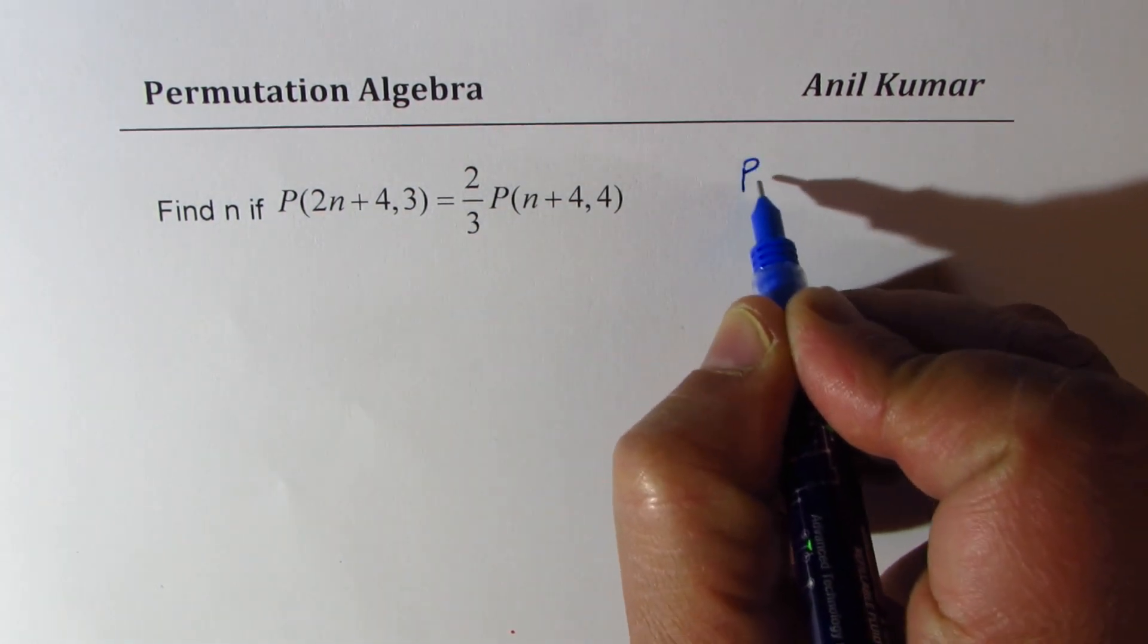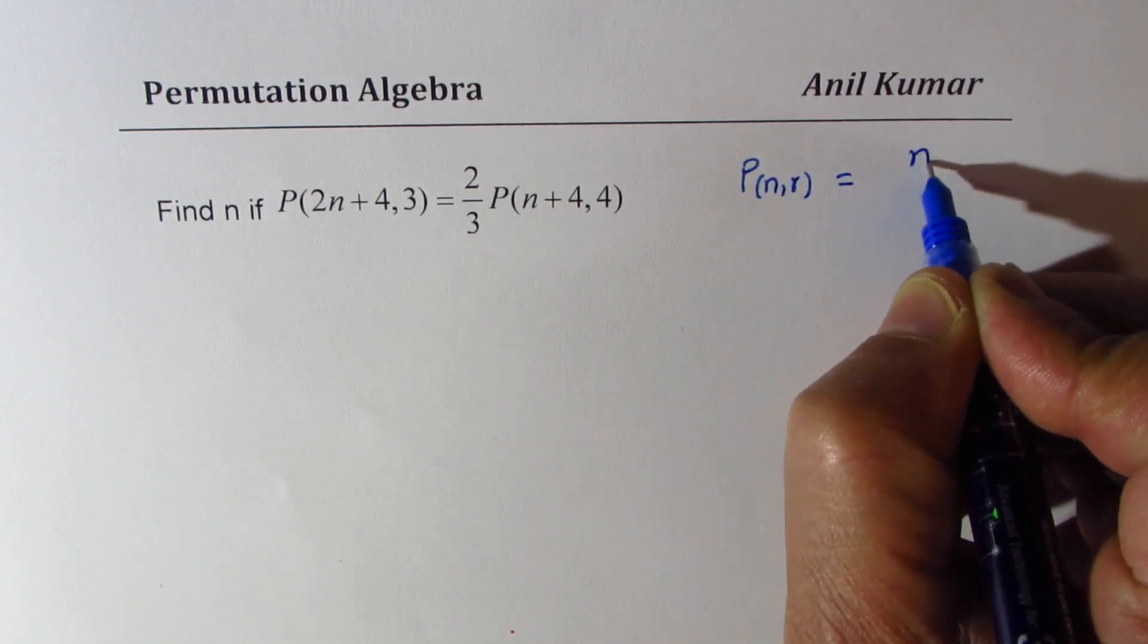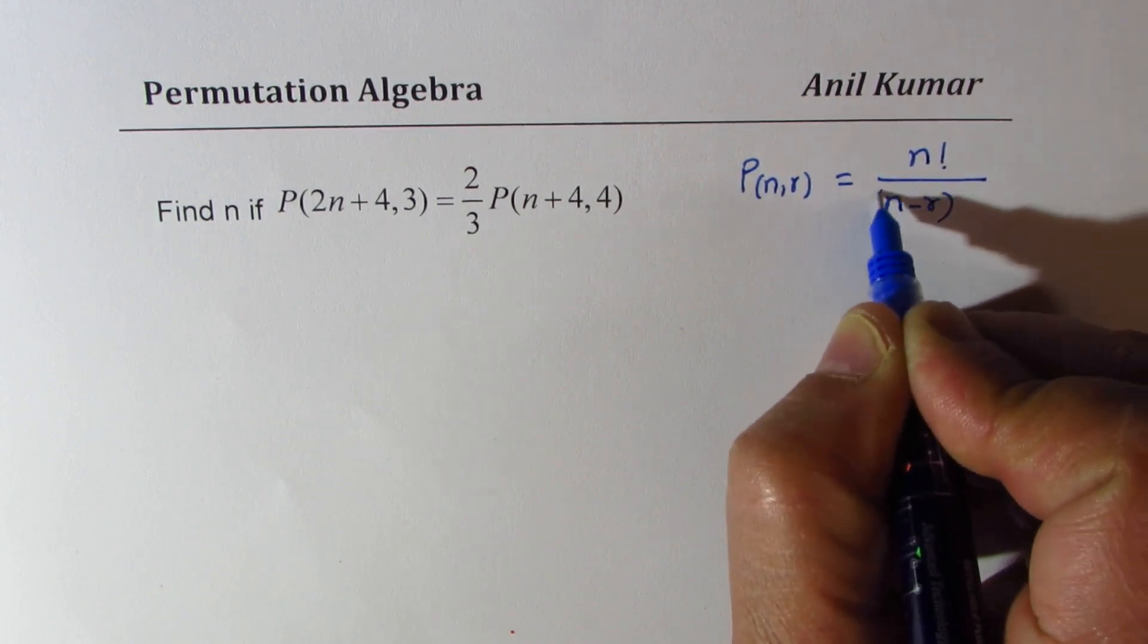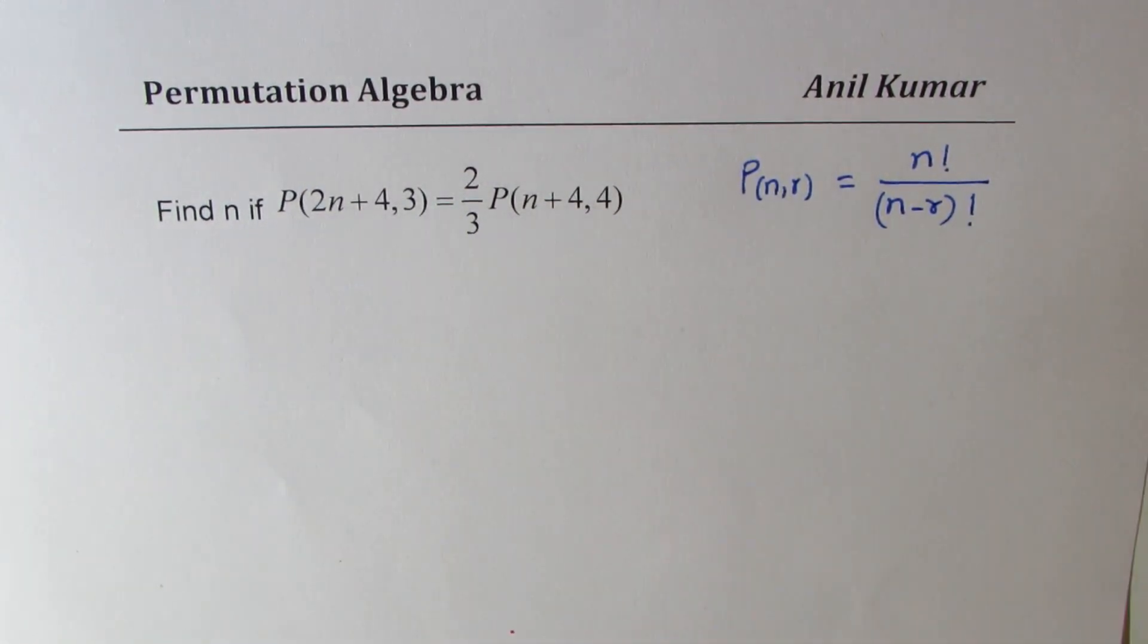You remember the formula for P(n,r) is n factorial over (n-r) factorial. So we have to use this formula and find the value of n.